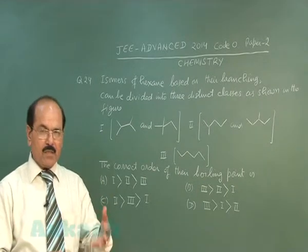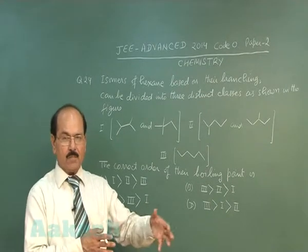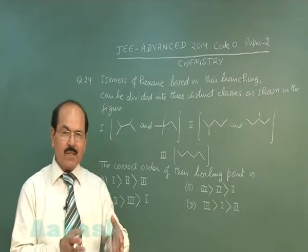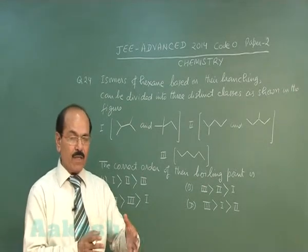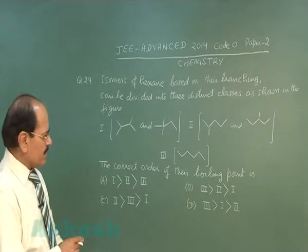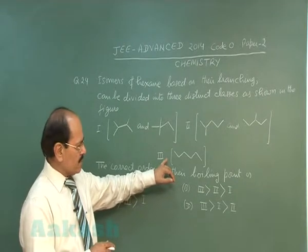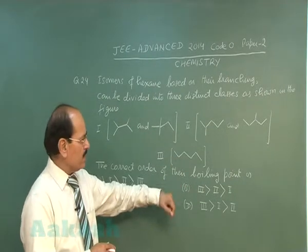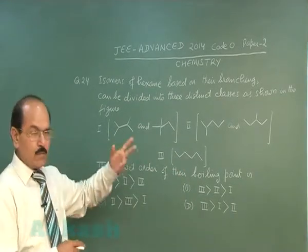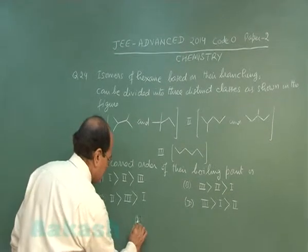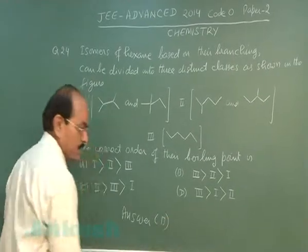As branching increases, the molecule tries to have a spherical shape, so boiling point decreases because of weaker intermolecular force of attraction — the area of contact decreases. The correct answer will be option B, because in the third class we have the straight chain alkane, in the second class there is only one branch, and in the first class there are two branches. So the correct answer is option B.